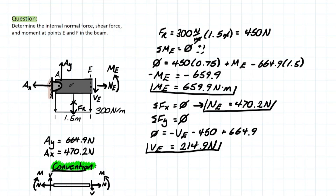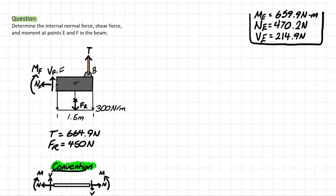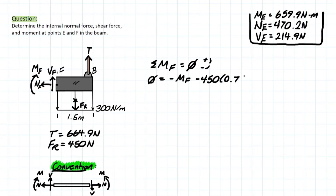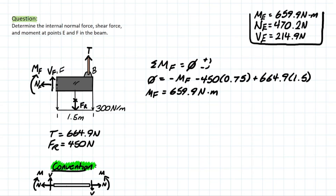Similarly, we do the same at cut F, taking the right side of F since it will be simpler. Now we're dealing with the tensile force in the pulley which we solved for previously, and FR again based on the 1.5 meter span from the cut. Taking the moment at F equal to 0: the moment at F is negative because it's going clockwise, same with the 450 newton resultant force at 0.75 meters away. The tensile force is positive going counterclockwise at 1.5 meters away. Solving for MF, we get 659.9 newton-meters, and the signs confirm the direction we drew is correct.